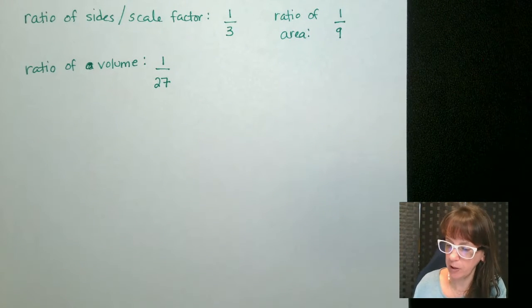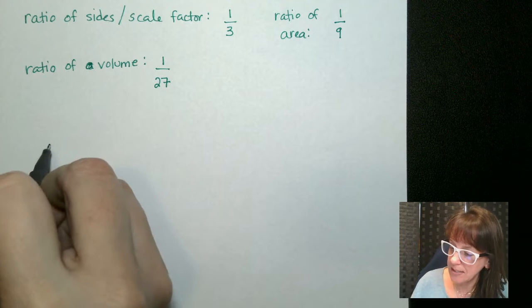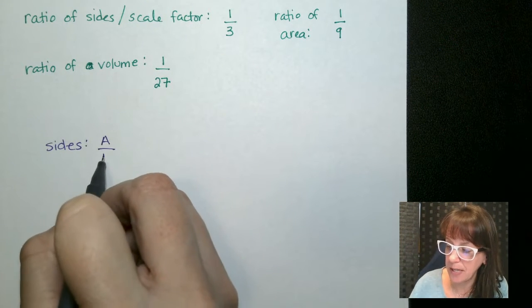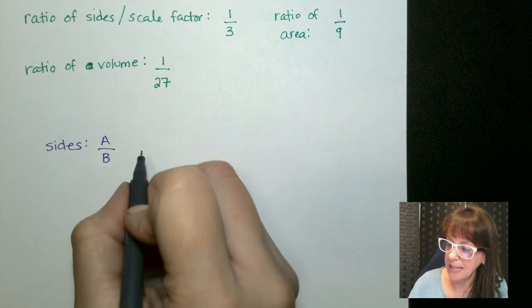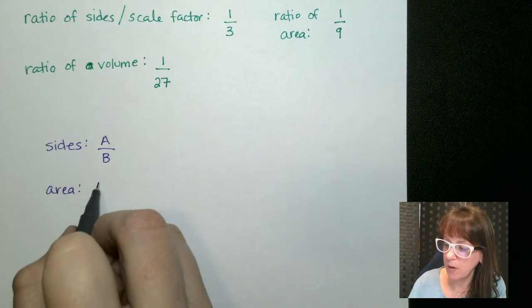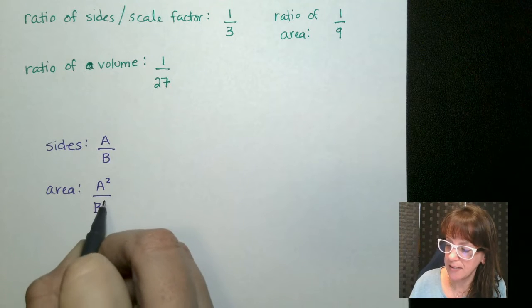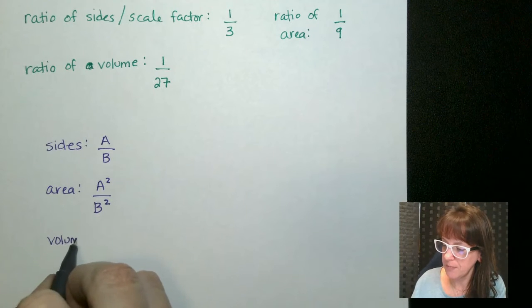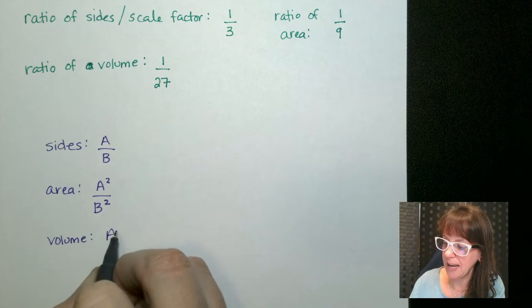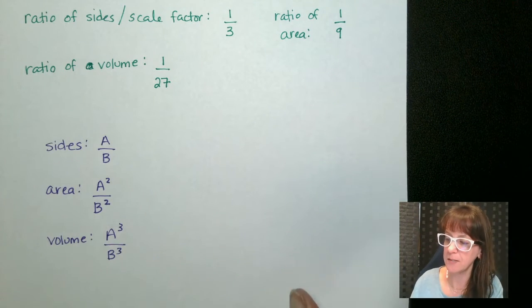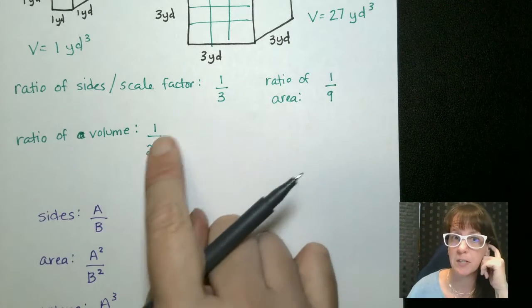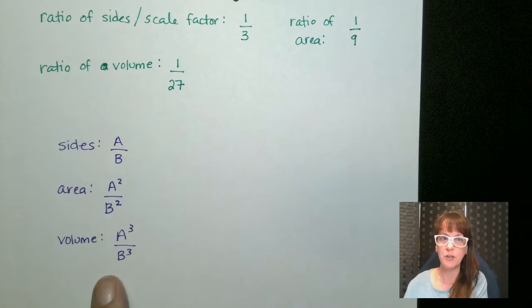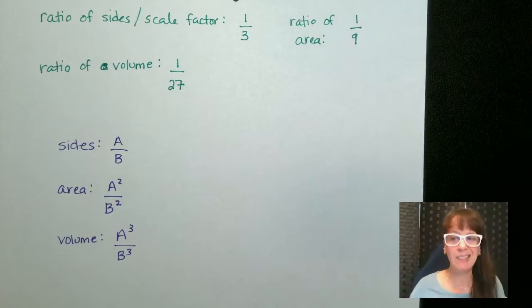Here's the deal and here's probably what you'll want to write down with your notes: sides are just A to B whatever those sides are. The area is A squared to B squared, your scale factor essentially. Your volume this time is A cubed to B cubed because if you see that we took our scale factor 1 to 3 and we cubed both the top and the bottom we got 1 to 27. So you'll want to write these guys down as your notes and then let's practice this.